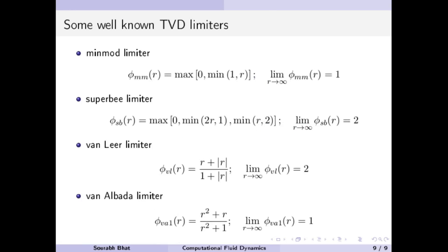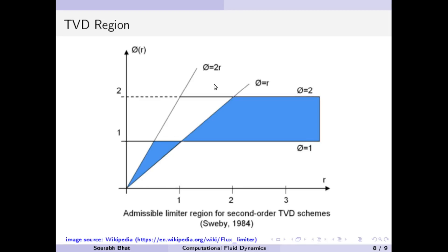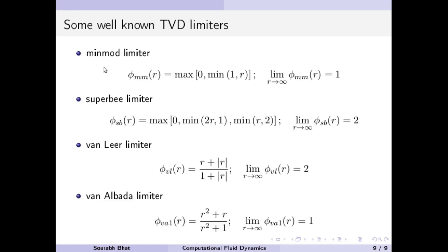There are some well-known limiters which pass through this region. Some of the famous ones are the Minmod limiter, Superbee limiter, Van Leer limiter, and Van Albada limiter. In our code, we will be using the Van Albada limiter.